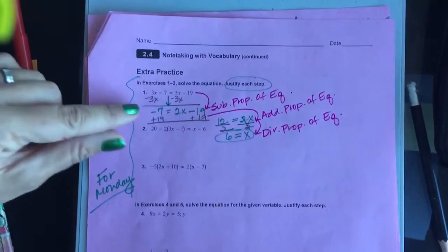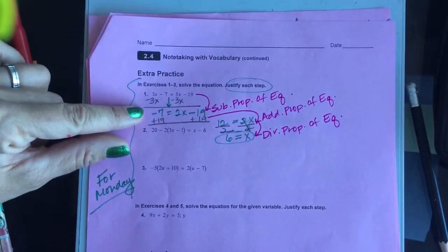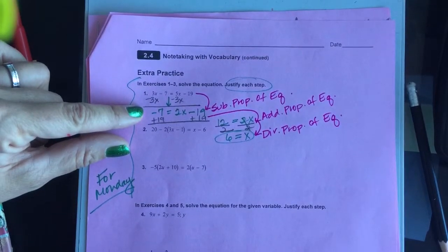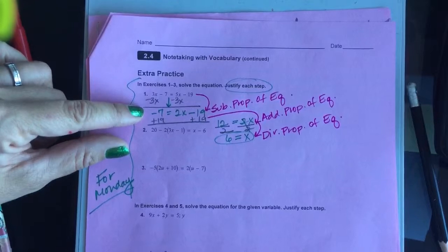You forgot one. I did? Yeah. But when you put x equals 6, you have to put substitution property. No, not yet. I haven't used the substitution property.